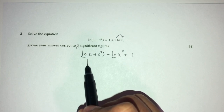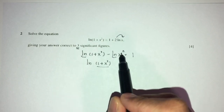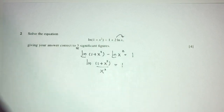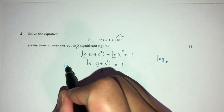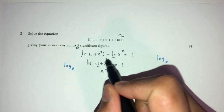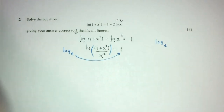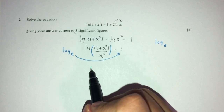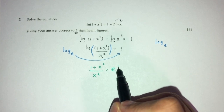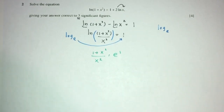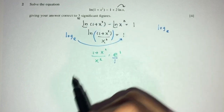Since we have a minus sign between two ln terms, we can combine them into a single logarithm by dividing: ln of (1 plus x squared) over x squared equals 1. Since ln is log to the base e, we convert: (1 plus x squared) over x squared equals e to the power of 1.